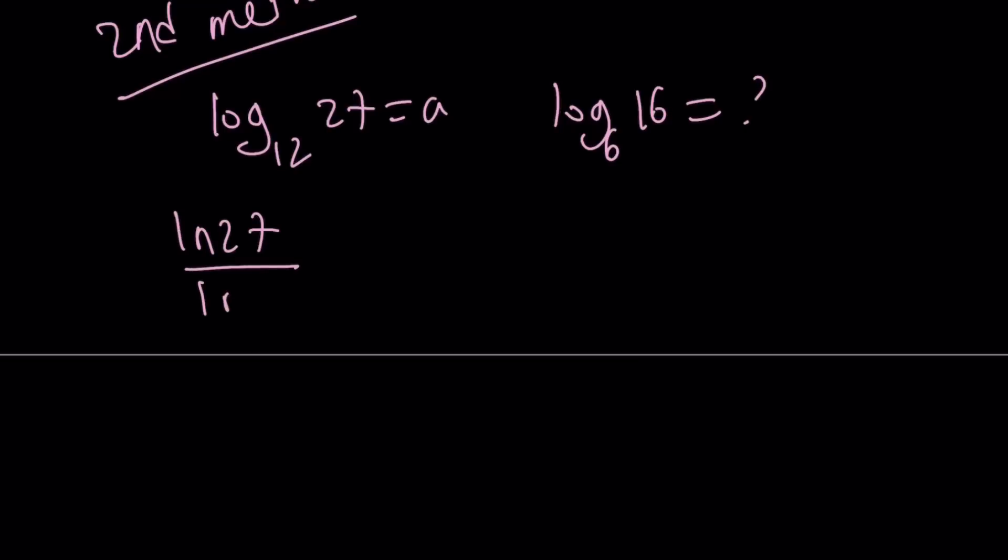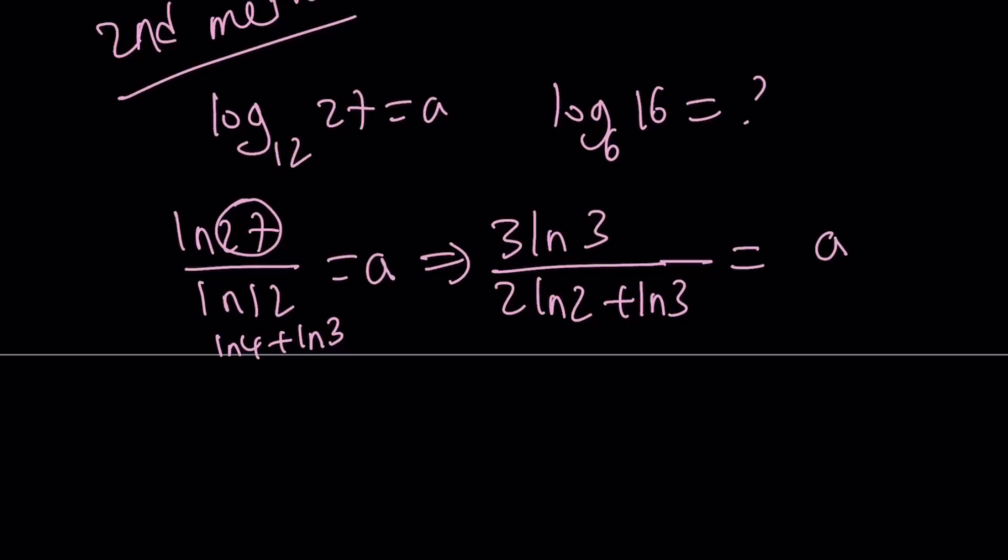ln 27 over ln 12 equals A. So I'm going to use change of base. Now, 27 is 3 to the third power. So can I write this as 3 ln 3? Hopefully you allow me to do that. And this is ln 4 plus ln 3 because ln 12, 12 is 4 times 3, and we're using the properties. So can I write the ln 4 as 2 ln 2 plus ln 3? Hopefully that makes sense. And this is equal to A. Awesome.